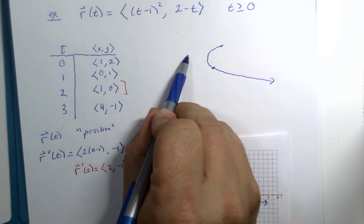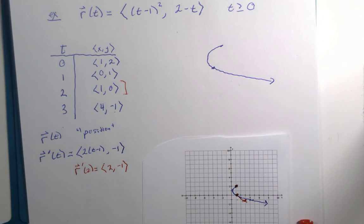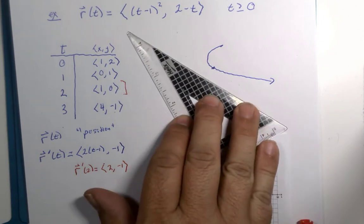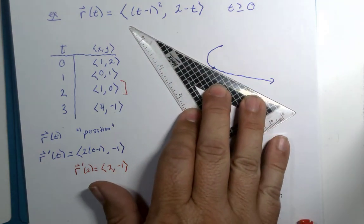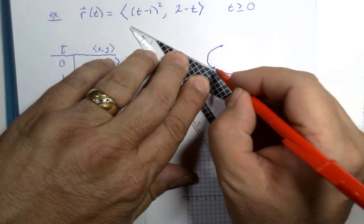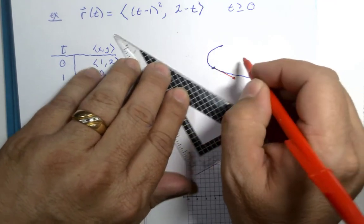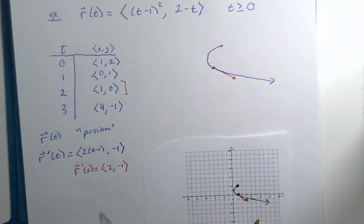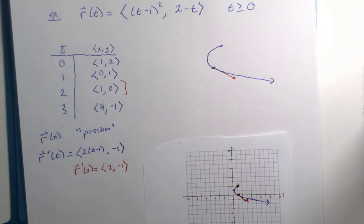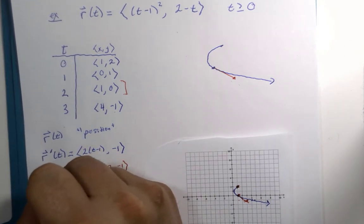Imagine a tangent line right there, you know, something that looks like this, there we go. So, this vector 2, negative 1 is on that tangent line, and you might better be acquainted with it, let me introduce it by its first name, as the velocity vector.